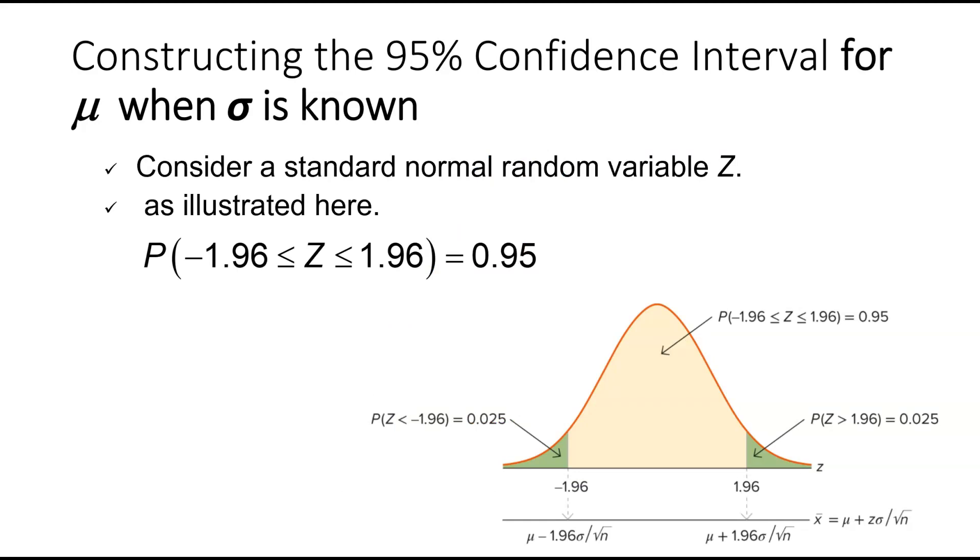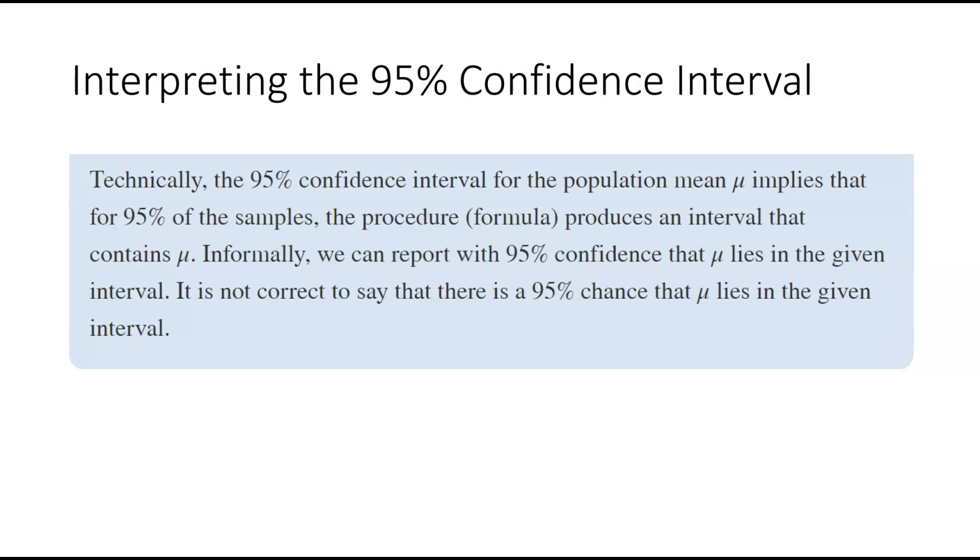So when we construct the 95% confidence interval for mu when sigma is known, we are going to be using the normal random variable Z. Similarly to the empirical rule, we're trying to find out the range at which we can be confident or at what percentage we can be confident that the mean falls within those values. How we want to word our confidence is with whatever the percent confidence, so with 95% confidence, we can report that the mean falls between the values of that interval.